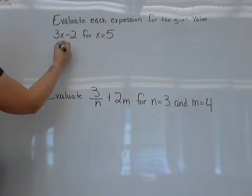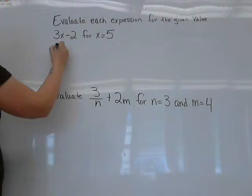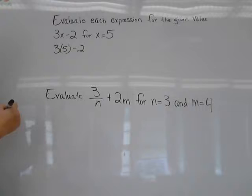So it's 3 times x minus 2. If I'm going to rewrite this and substitute 5 for this x, I would rewrite it as 3 times 5 minus 2.